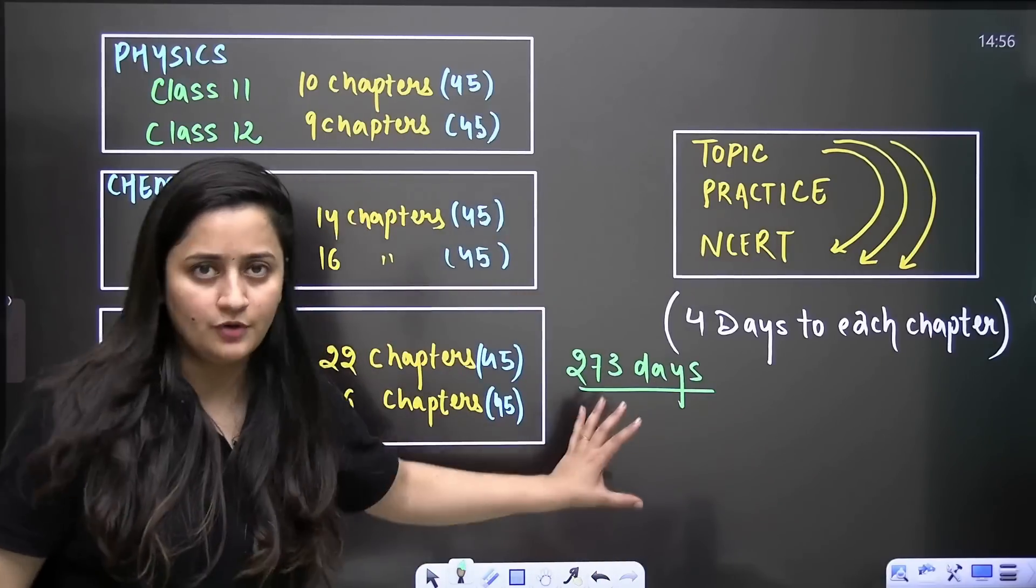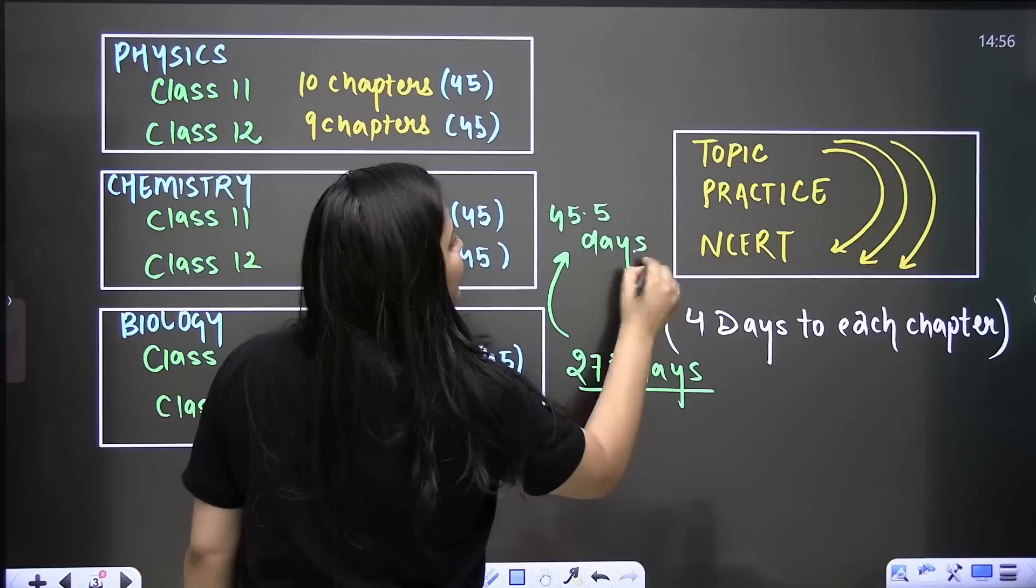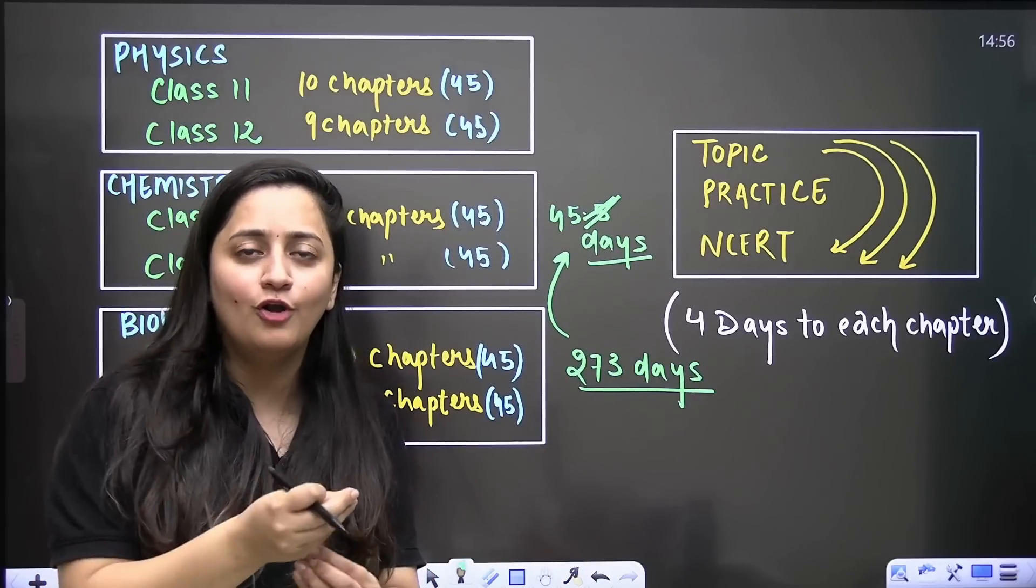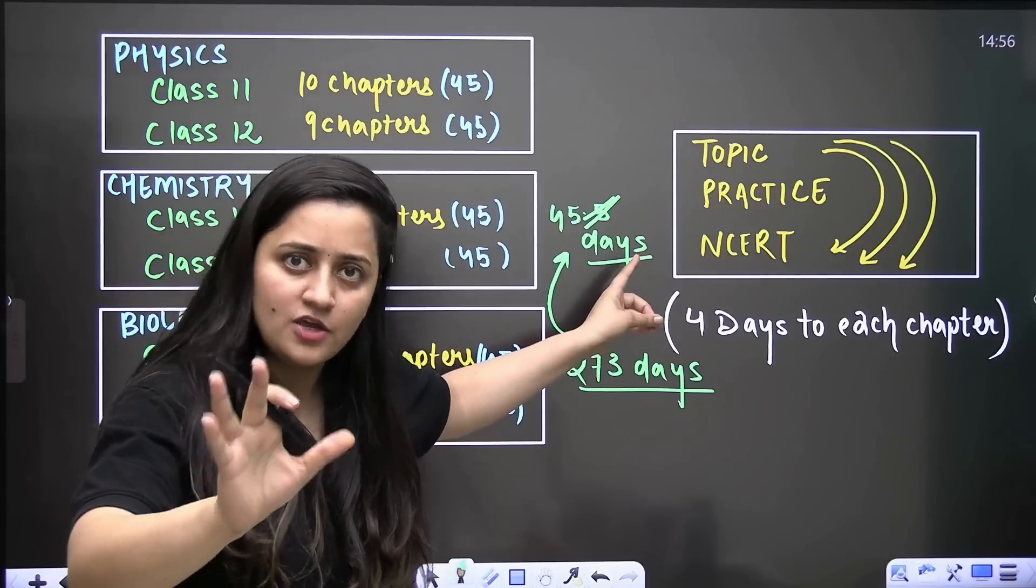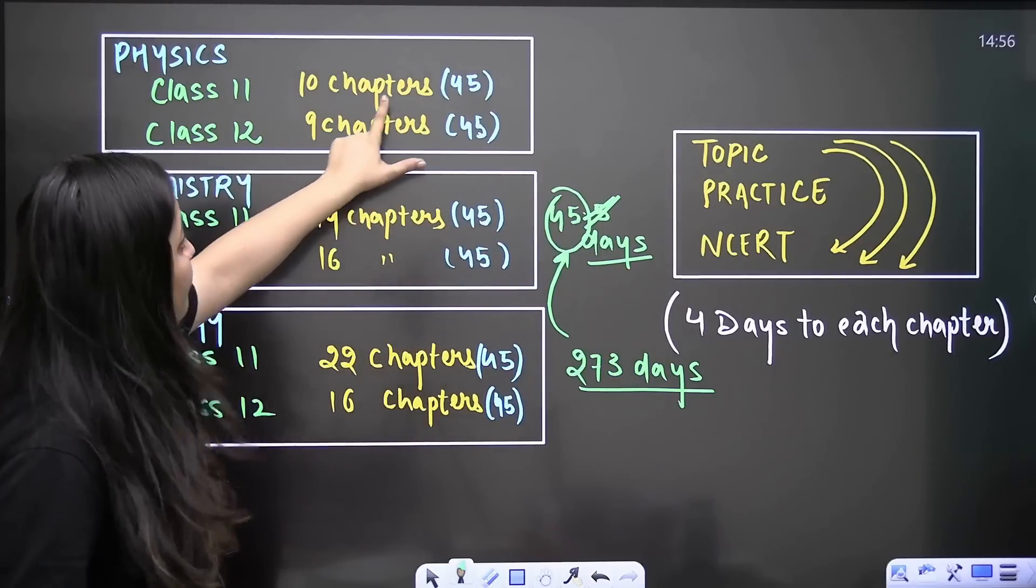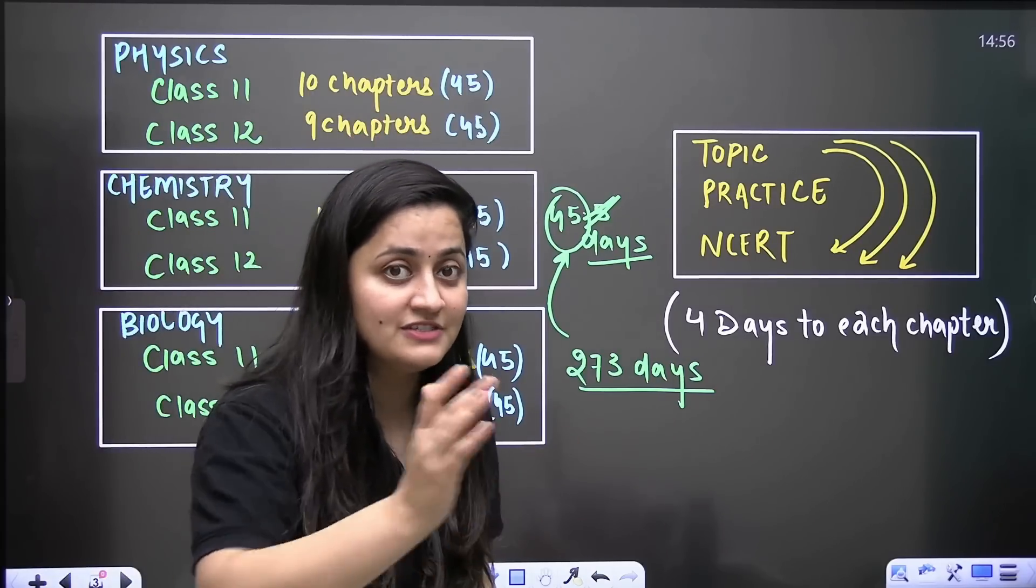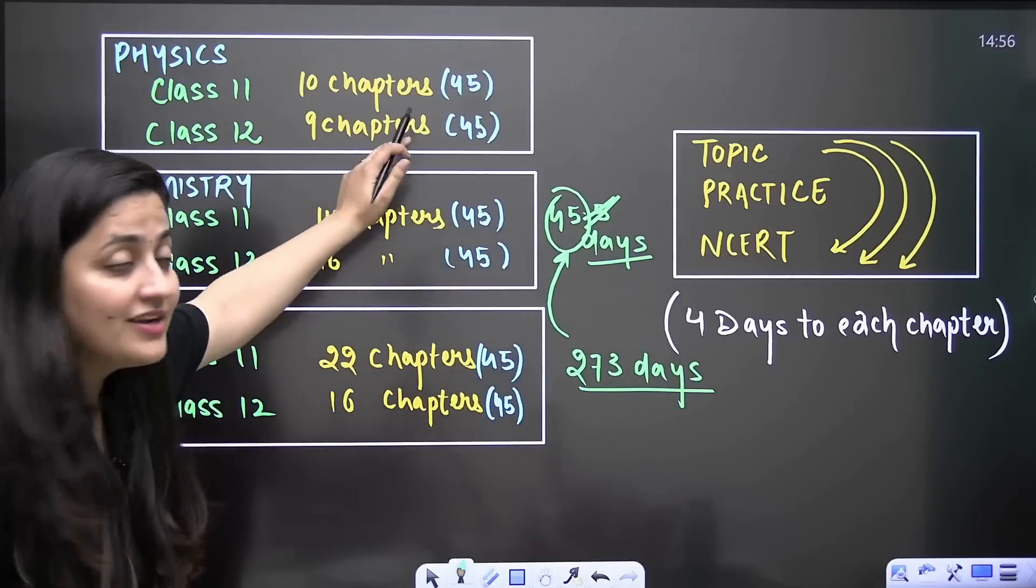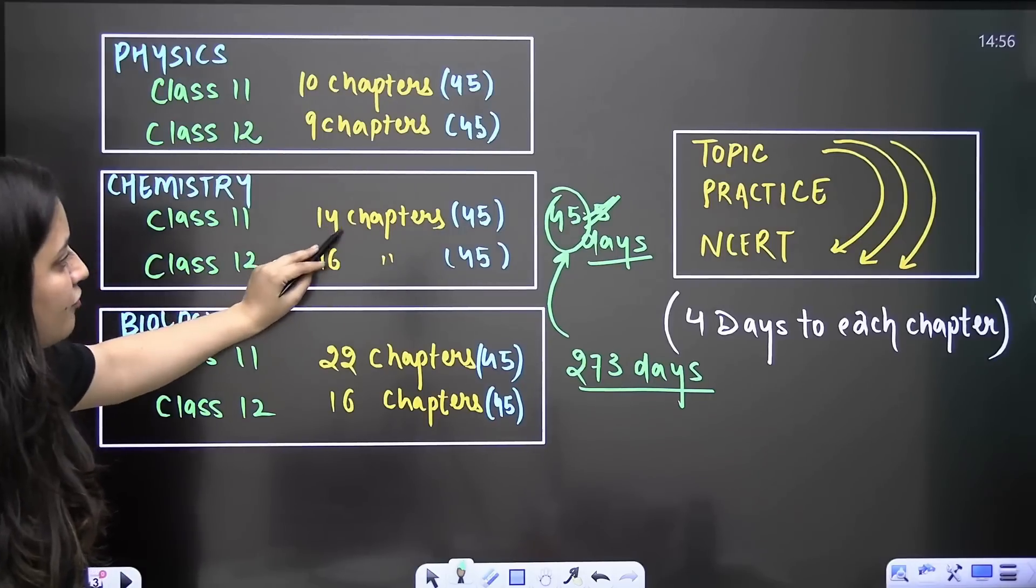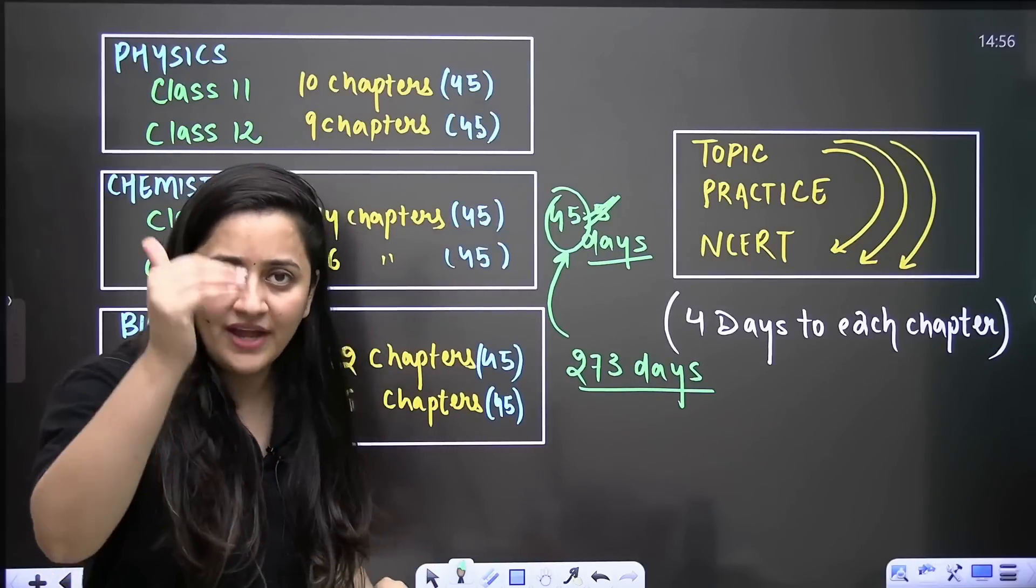These are the number of chapters that you have to cover in 273 days. So on an average for your class 11th physics syllabus, you will get 45.5 days. Let's subtract this half day because I know you guys are not going to follow a proper timetable and you will miss it. I'm not demotivating you, this is the harsh reality and we all know it. So let's say you just have 45 days for completing the 10 chapters of physics. Dedicatedly, you have 45 days.